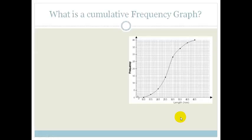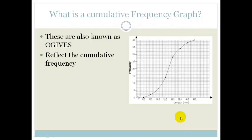So this is what a cumulative frequency graph looks like. They're also known as ogives or ogives depending on who you talk to. I call them ogives. They reflect the cumulative frequency, in other words they reflect the running total of the frequency. It's typically S-shaped.